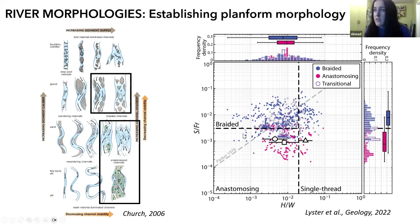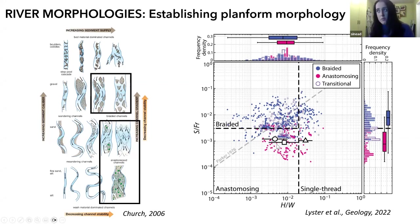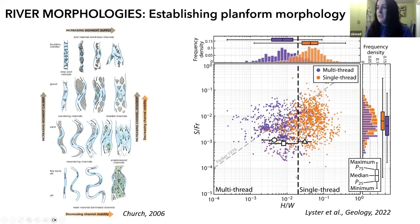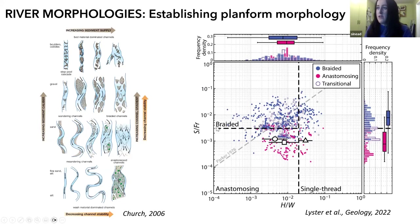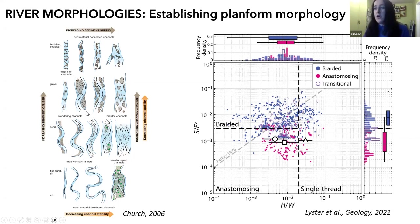If I take my multi-thread rivers and split them into braided multi-thread and anastomosing multi-thread, I realized that slope is actually a very good discriminator of the multi-thread planform type. This is super useful in the rock record. In my new stability field, the vertical line separates single-thread from multi-thread rivers, and then you can use slope and an estimate of the Froude number — which is quite easy to calculate — to determine whether your multi-thread river is braided or anastomosing. Once you've got that estimate, you can get a lot of insights into the processes operating in these systems.